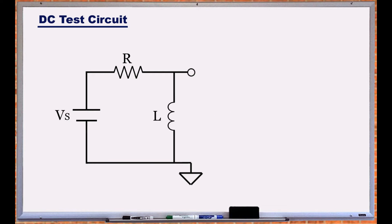If Z is purely inductive, at DC it is essentially a short resulting in 0 volts across L.